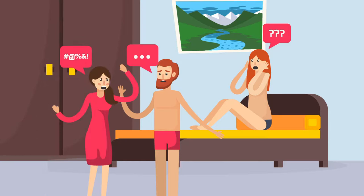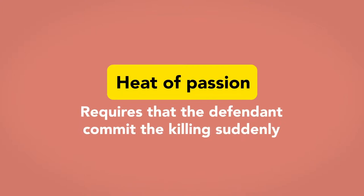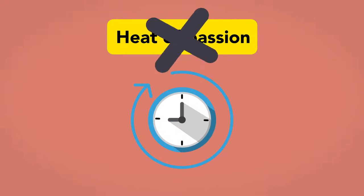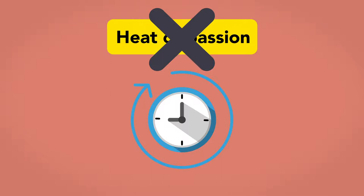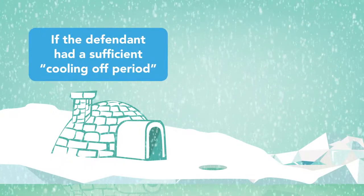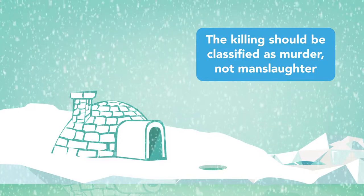While catching one's spouse in an affair has traditionally been the classic example of provocation, the heat of passion partial defense requires that the defendant commit the killing suddenly. If too much time passes between the provocation and the killing, the defendant cannot claim to have been acting in the heat of passion. Thus, if a defendant has a sufficient cooling-off period, the killing should be classified as murder, not manslaughter.